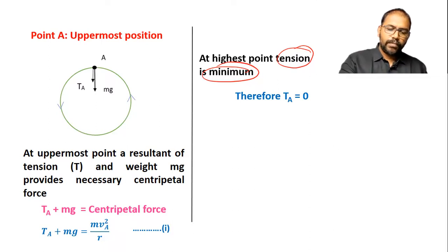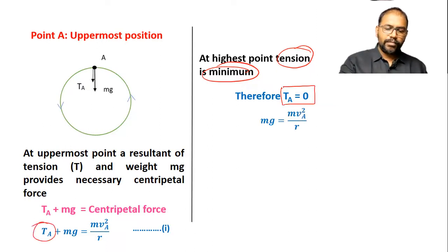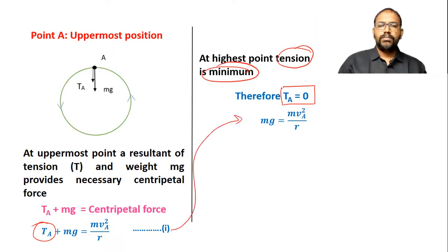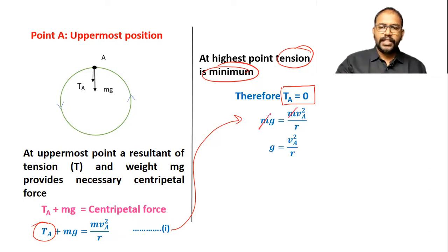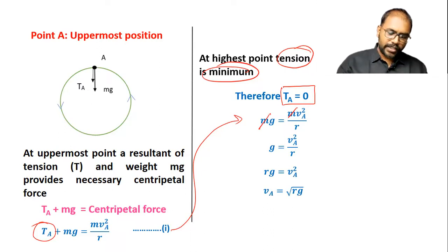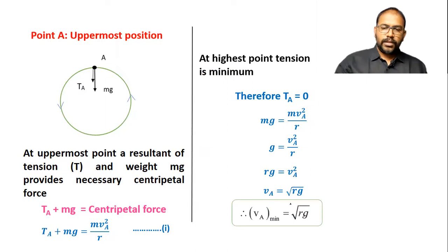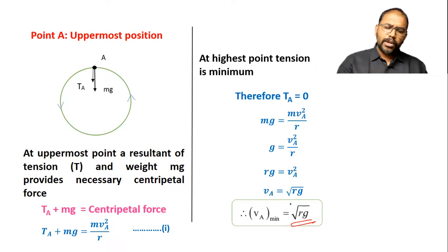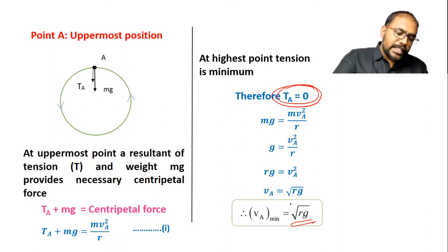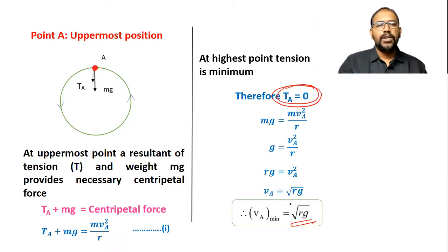Substituting tension at A as 0, we get: mg = mv²A / r. Cancelling the common term m, and rearranging, we get: vA² = rg, so vA = √(rg). This is the minimum speed at point A. Why minimum speed? Because we considered tension is minimum at A. This is the essential minimum speed at point A to complete vertical circular motion.